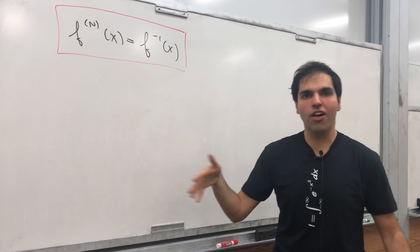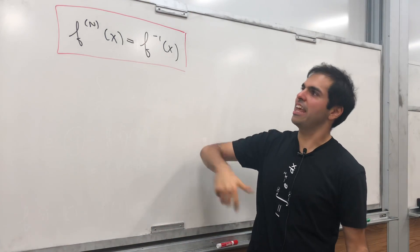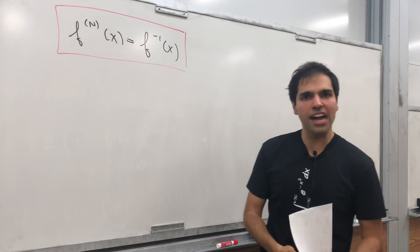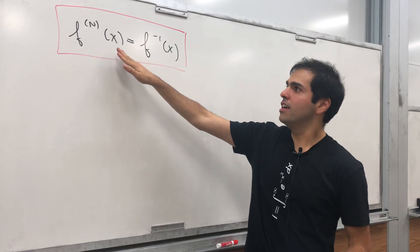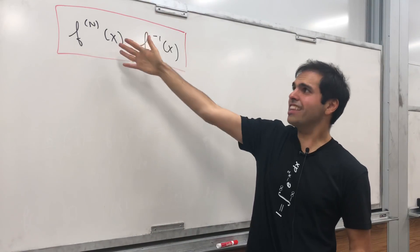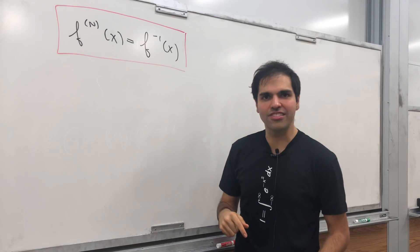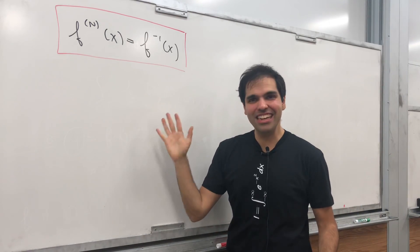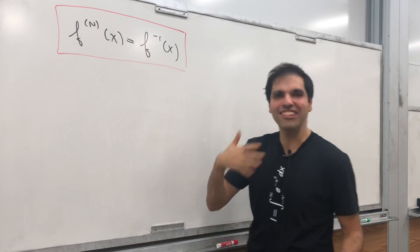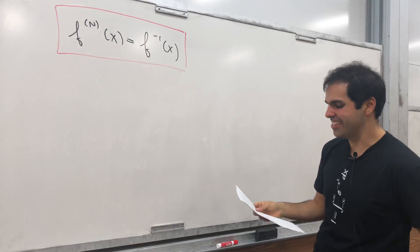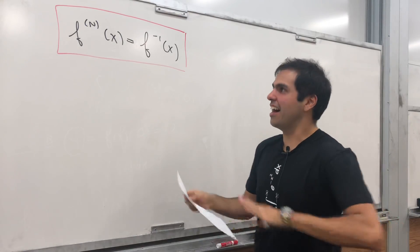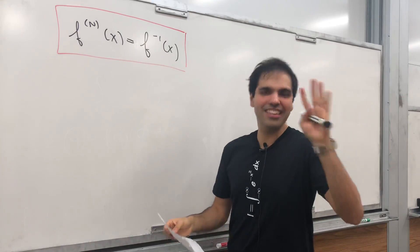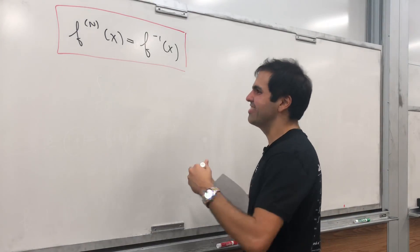In a previous video, I found all the functions f such that f prime of x equals the f inverse of x. And there's someone who asked me: what about the functions such that the nth derivative of f equals the inverse of f? It's actually really cool — it leads to something called the metallic ratios. This idea is due to John Kampmeyer. Thank you so much for the idea.